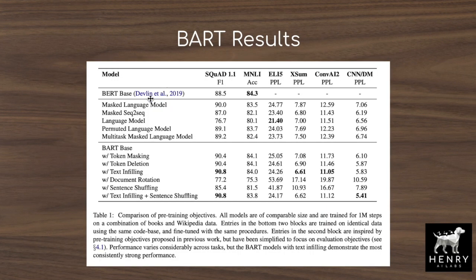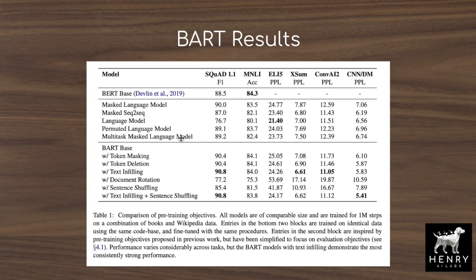The BART paper takes apart different ways of structuring the architecture and these different pre-training ways of corrupting the denoising autoencoder objective. They show there's a difference between performance in text classification versus natural language generation. In the case of the Explain It Like I'm Five dataset, which is a summarization dataset, the left-to-right autoregressive language model performs much better than the masked language model used in BERT. BART is really good at combining bidirectional context with left-to-right autoregressive generation, which is great for producing summaries or chatbot-style responses.